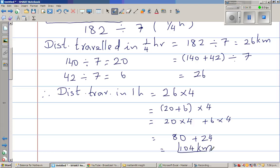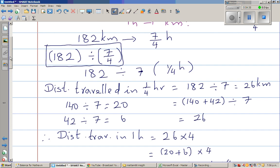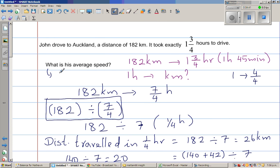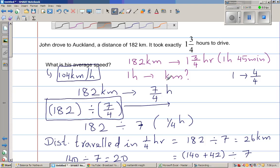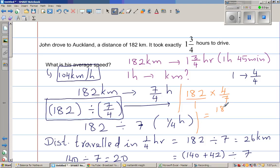So he traveled in one hour, 104 kilometers. So the answer here, you can write the average speed is 104 kilometers per hour. So this is the answer. Now let me come back to this. I told you I will explain this. This is 180 divided by four. So now dividing by four is same as multiplying by the opposite. So this is 182 times four over seven.